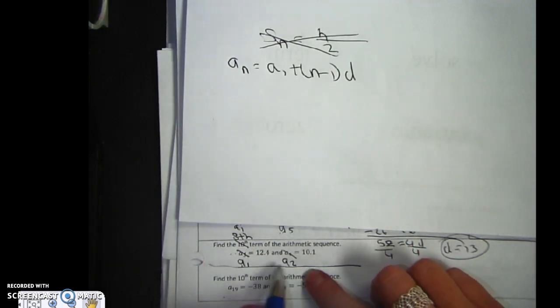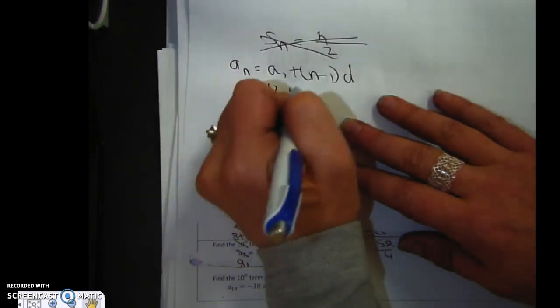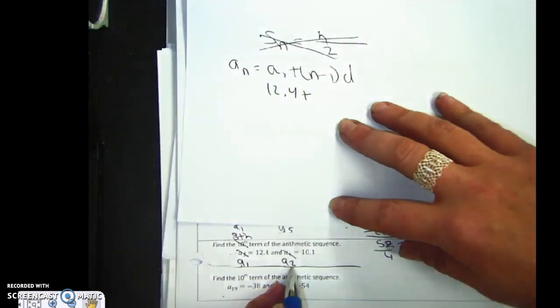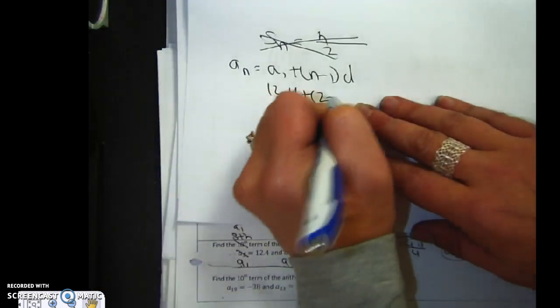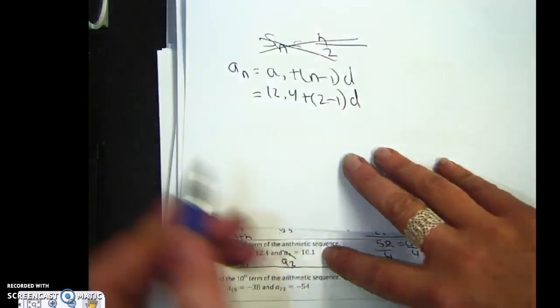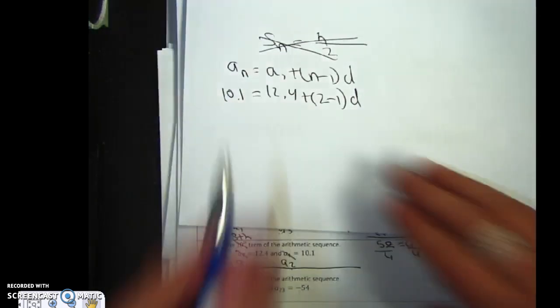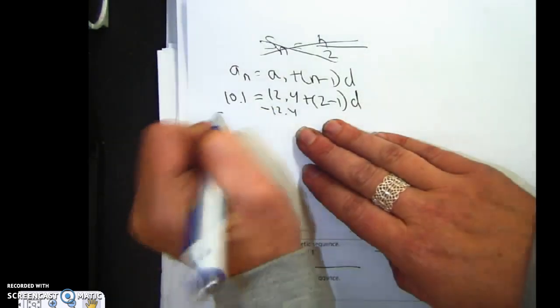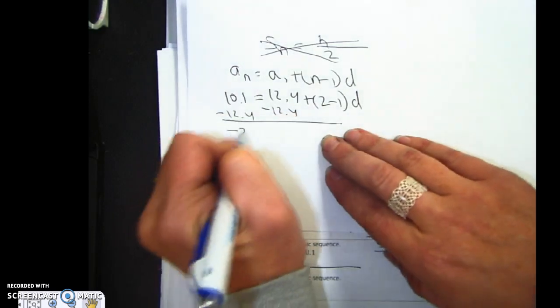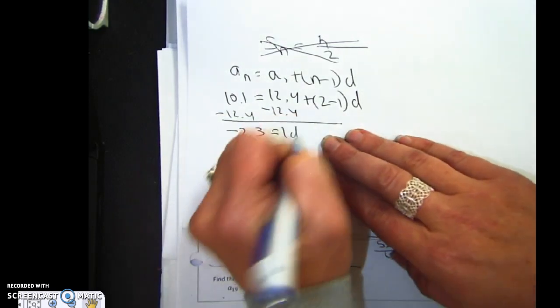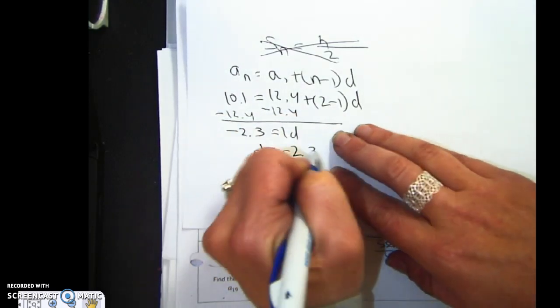So I have my first term and that's my second term. I'm going to go 12.4 plus. I'm going to use my second term to figure out the pattern. If I had the pattern, life for me would be a lot easier. So now I subtract 12.4. I get negative 2.3 equals 1d. d equals negative 2.3.